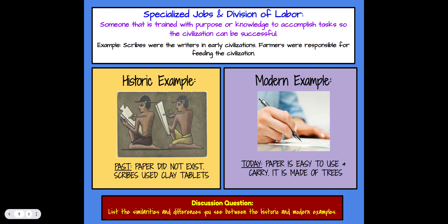Specialized jobs and division of labor means someone trained with purpose or knowledge to accomplish a task so the civilization can be successful. In the past, scribes were the writers of early civilizations and farmers were responsible for feeding everyone. Today, everybody has specialized jobs — teachers, postal workers, police, company workers — all ensuring the civilization grows. With the expansion of education, everyone has access to learning to read and write. For your discussion question, list similarities and differences between historic and modern examples of specialized jobs and division of labor.